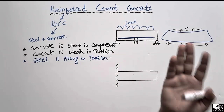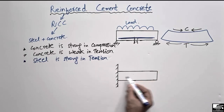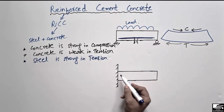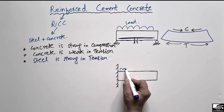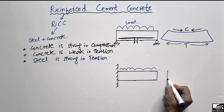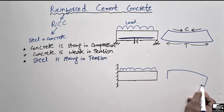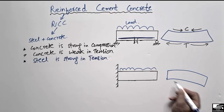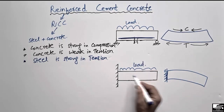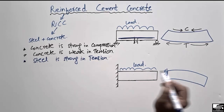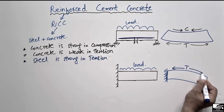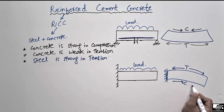Similarly, if we look at a cantilever beam — this was a simply supported beam, now consider a cantilever beam — when there is a load acting on this beam, it will deflect like this upon loading. Now, on the top there will be tension and on the bottom there will be compression, which is opposite to the simply supported beam.